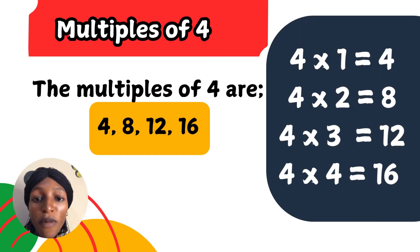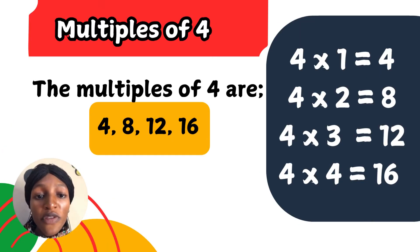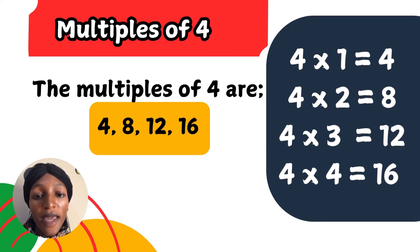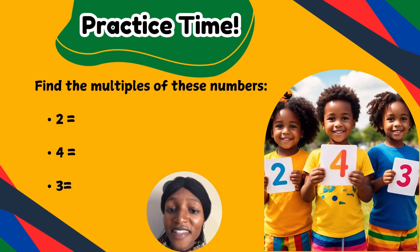The multiples of 4. 4 times 1 is 4. 4 times 2 is 8. 4 times 3 is 12. 4 times 4 is 16. The multiples of 4 are 4, 8, 12, and 16. It's practice time!